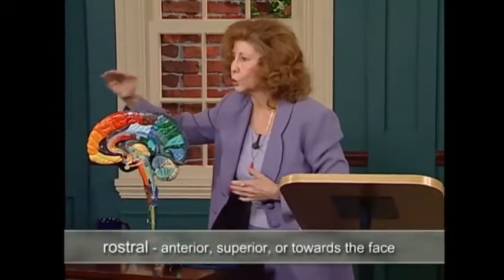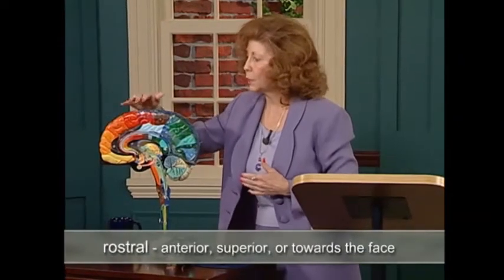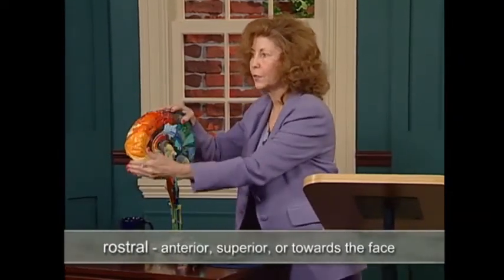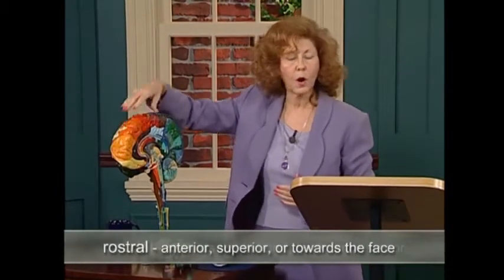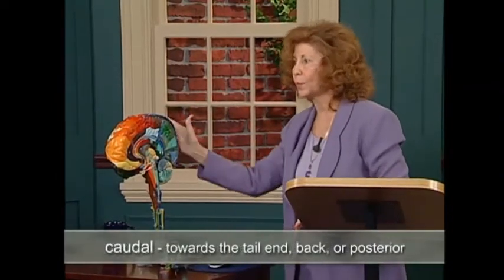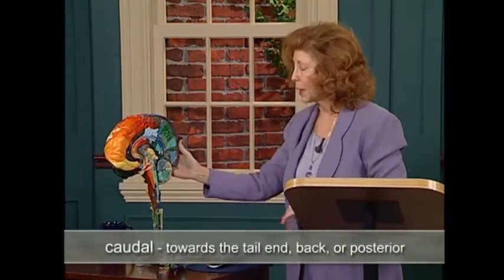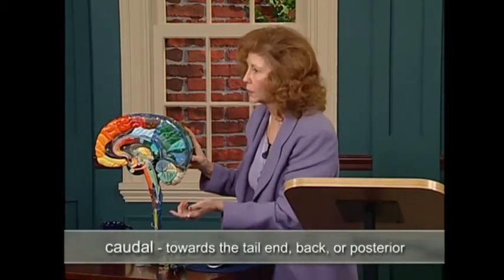In order to refer to different structures in the brain, we have to learn a number of reference terms. For example, the terms rostral and caudal. Rostral means anterior, superior, or towards the face — towards the face end of the individual. So this would be rostral in the brain. The term caudal means towards the tail end, or the back, or posterior — that would be the back of the brain. The cerebellum would be a caudally located structure.